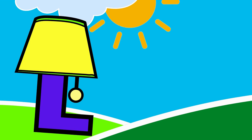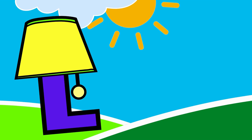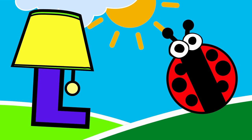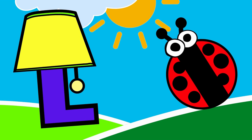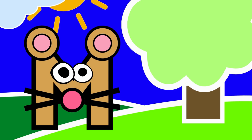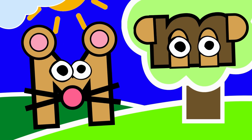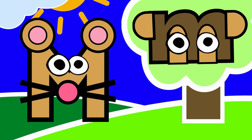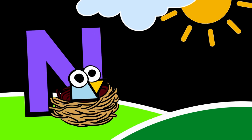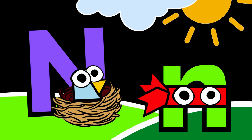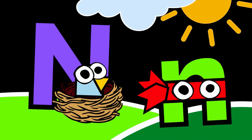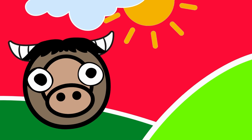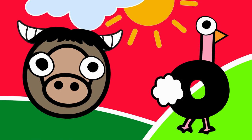L is for lamp looking so bright. L is for ladybug, what a little sight. M is for mouse, tiny as can be. M is for monkey hanging in the tree. N is for nest with a baby blue bird. N is for ninja who doesn't say a word. O is for ox grazing in the sun.